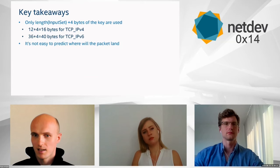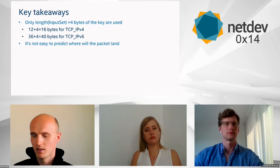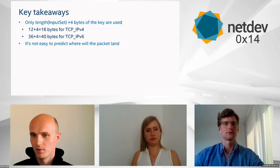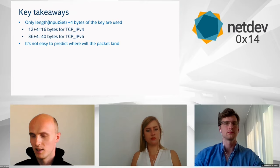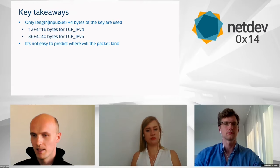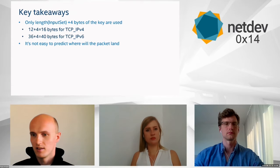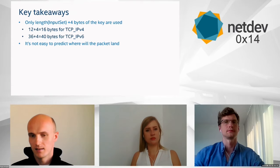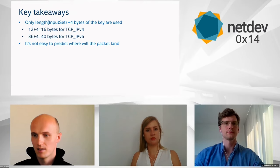For example, bytes 4–8 are used for both source and destination IP addresses. Also, we are not using the whole key — only the portion matching the input set length. For TCP over IPv4 we use 16 bytes of the key; for TCP over IPv6, we use 40 bytes of a key that is typically 54–56 bytes long. Because Toeplitz hash is XOR-based and many hashes map to the same queue, predicting where a packet lands after a key change is very difficult.